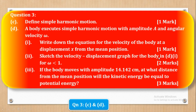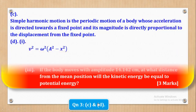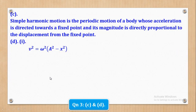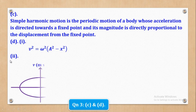Roman 2: sketch the velocity-displacement graph for the body in D Roman 1 for omega less than 1, and they give it two marks. The velocity-displacement graph will be in an elliptical shape.